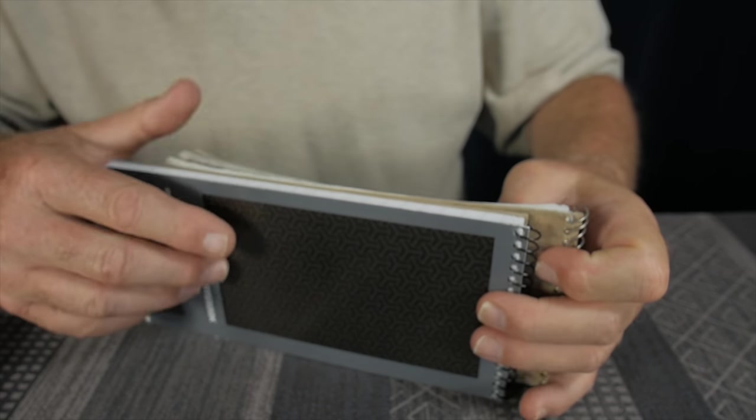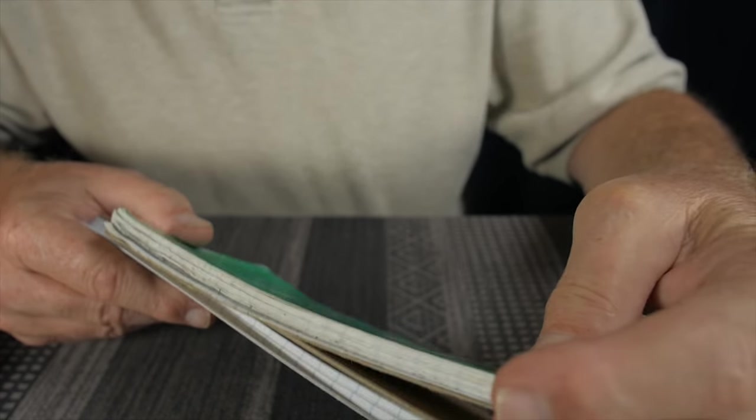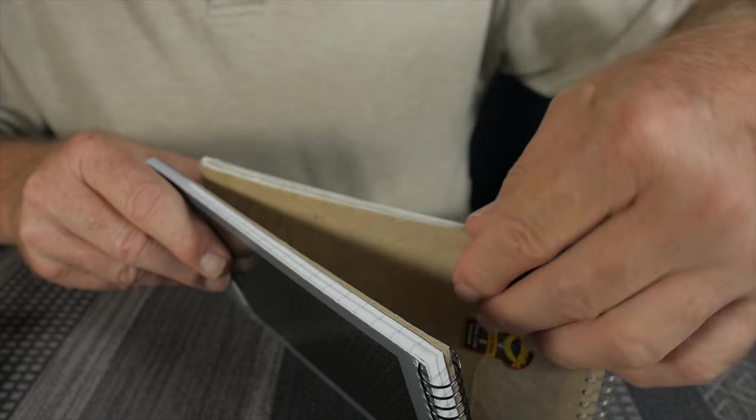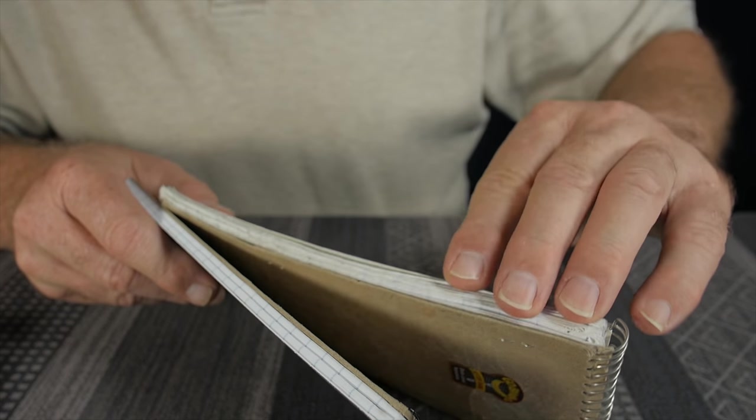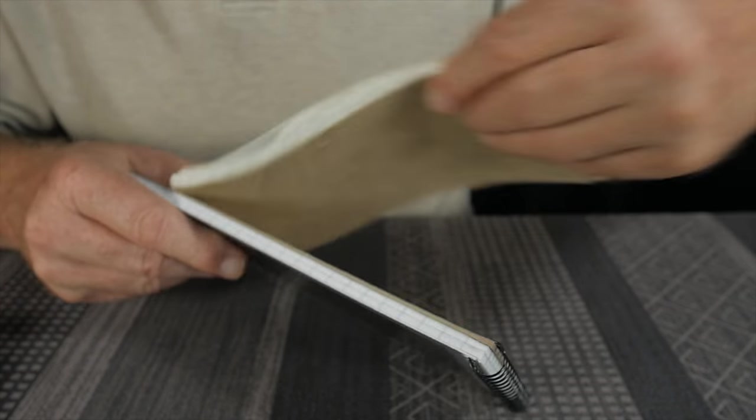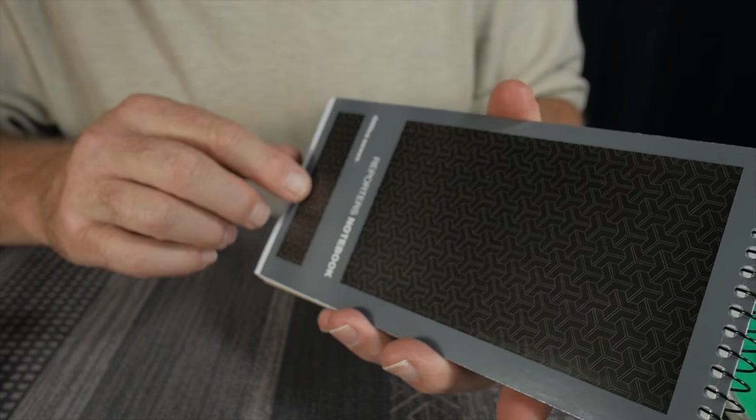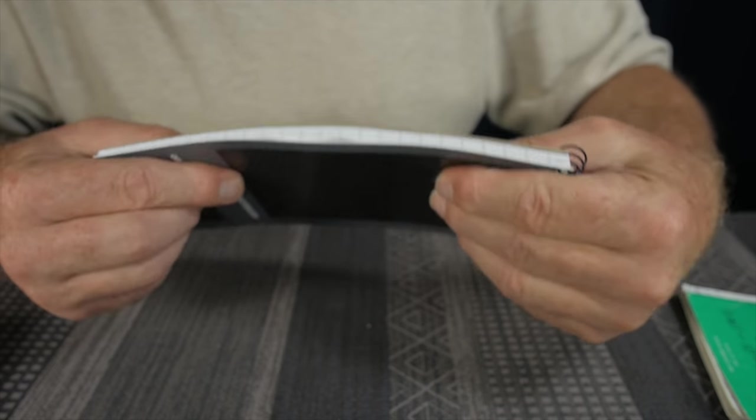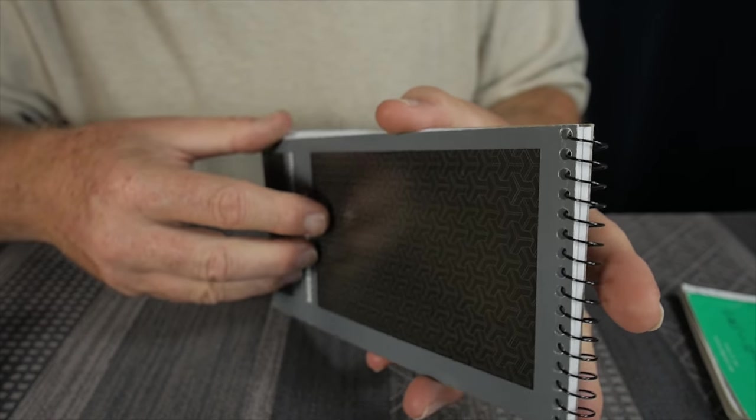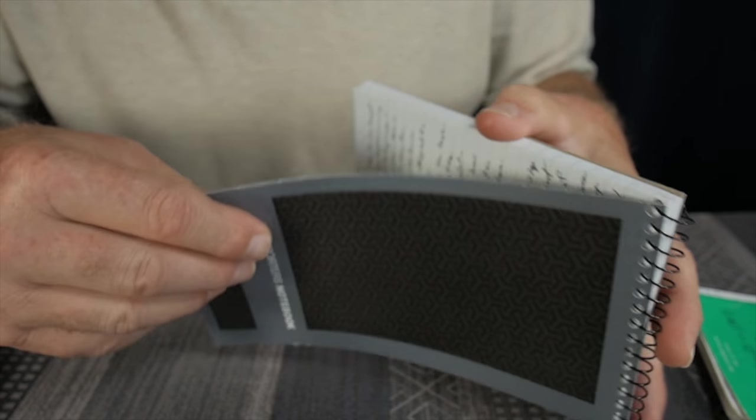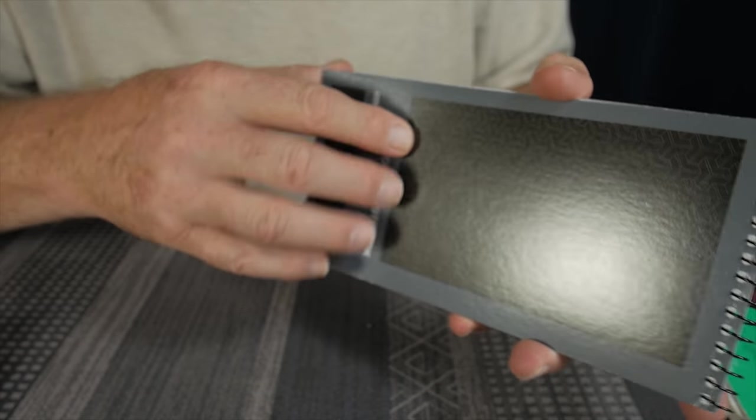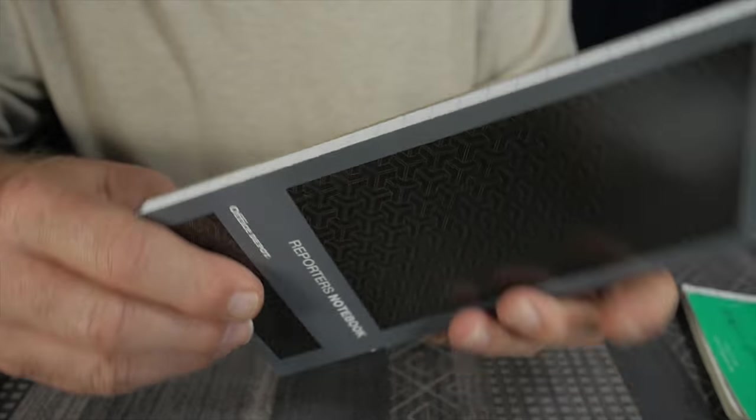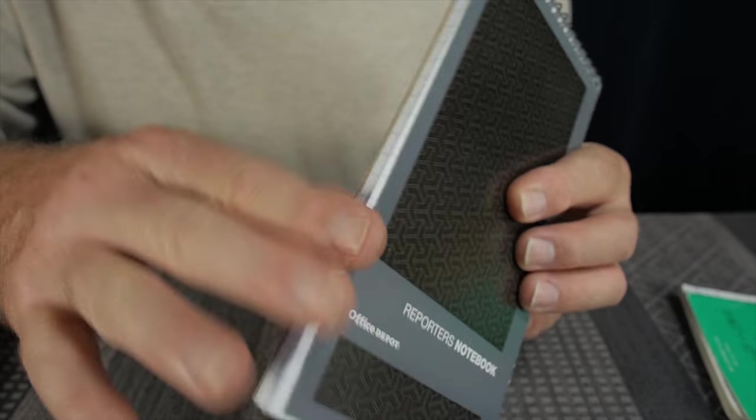The other difference between the two is the Ampad one here has the cardboard front and back covers are pretty thin. They're very flexible. Whereas this Office Depot brand one, it has a really heavy back cover that makes it more like a clipboard. It doesn't bend as much. And of course, the front cover is thinner. So I like that thick cardboard heavy backing on it.